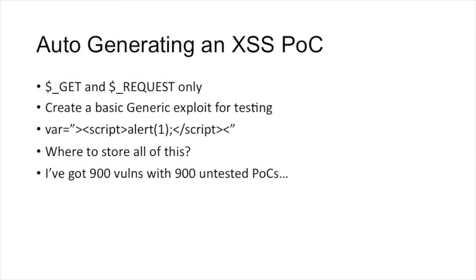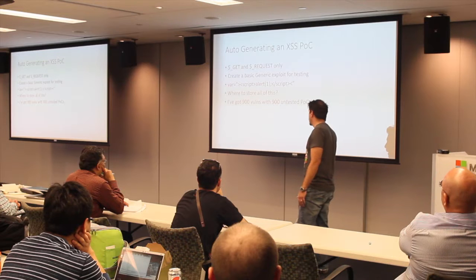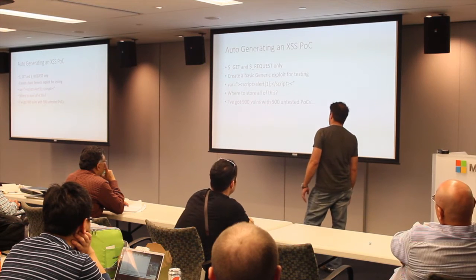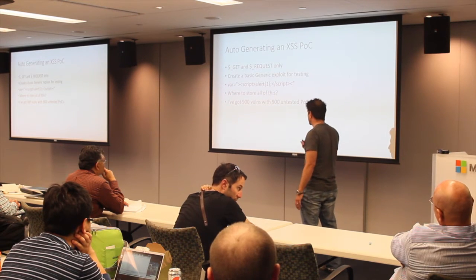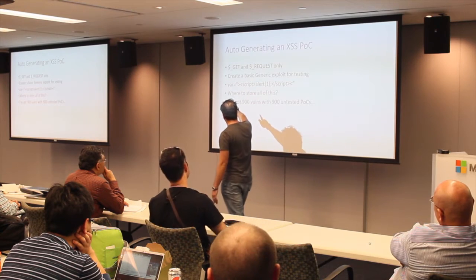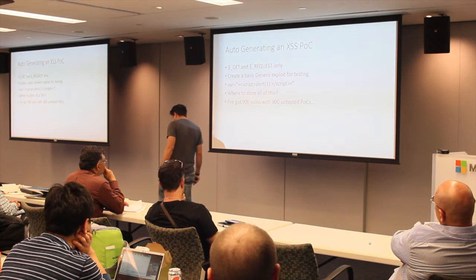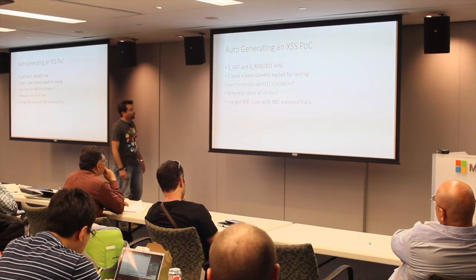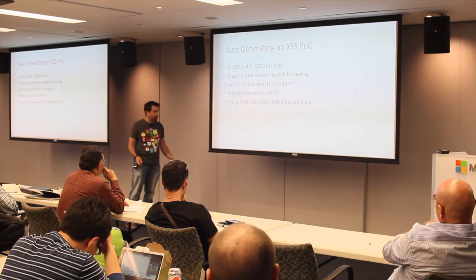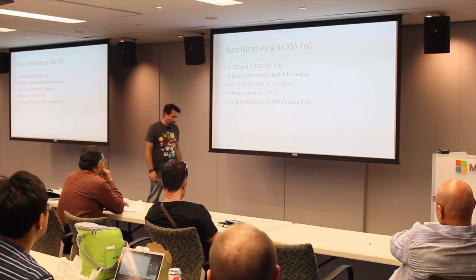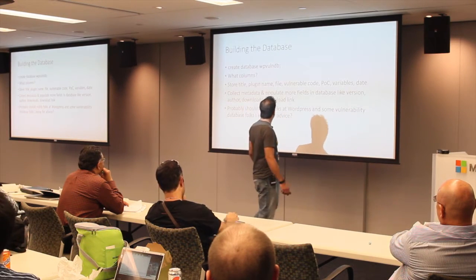To generate cross-site scripting proof of concepts, I only looked at GET and REQUEST — not POST, because that's a little harder. I actually wanted to see if this could even be done, so I started with the easy hanging fruit. I wanted to create a generic 'most likely to succeed' exploit: just have a closing script tag, then an opening script tag, try to break the HTML tag, and generate all this on the fly. I figured I'd have about 900 vulnerabilities with proof of concepts — so I built a MySQL database.